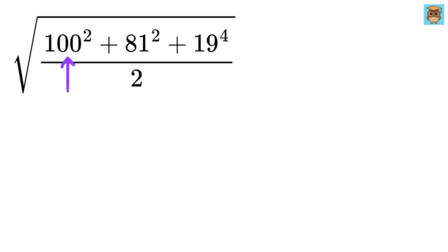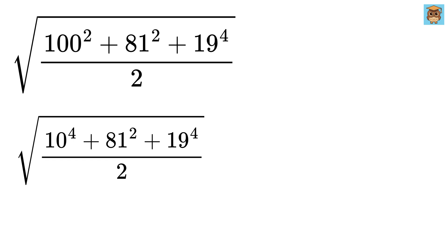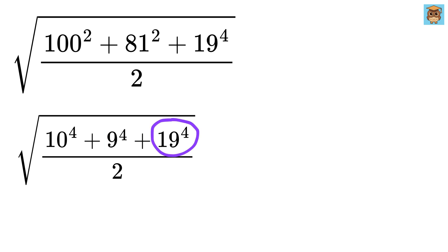Now this is 100 squared, and we can rewrite 100 as 10 squared. So this will become 10 squared whole squared, or 10 to the 4th. Same goes for 81 squared. We can rewrite 81 as 9 squared. So this will become 9 squared whole squared, or 9 to the 4th. And this 19 to the 4th remains as it is.